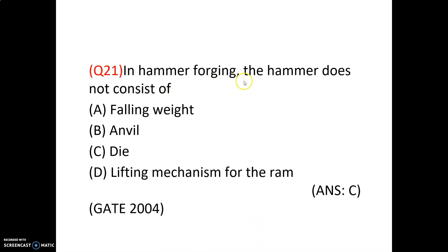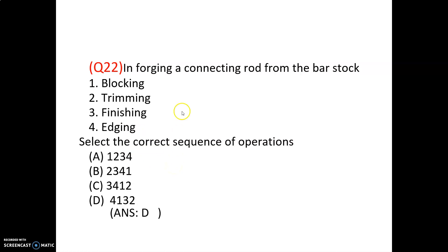In hammer forging, the hammer does not consist of a die — it consists of a falling weight, anvil, and die-lifting mechanism for the ram. In drop forging it has a die, but in hammer forging it does not consist of a die. So option C is correct.